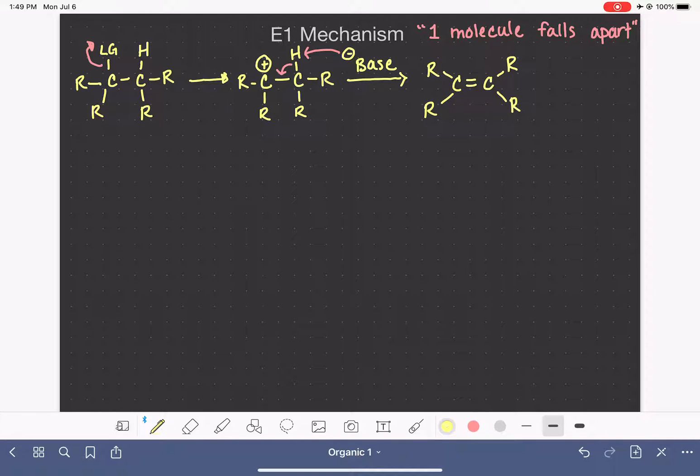So if you've looked at all my videos for the E2 mechanism, you saw that the E2 mechanism is actually really complicated. There's a lot of things that we have to consider as we are forming the product on paper for the E2 reaction. The E1 mechanism is much more simple than E2.